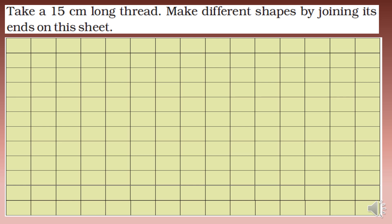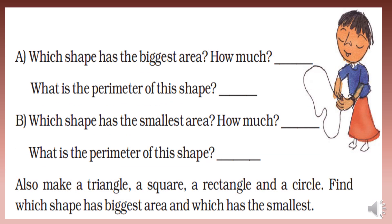Take a fifteen-centimeter-long thread and make different shapes by joining its ends on this sheet. I request you to do this by yourself. Find out which shape has the biggest area and how much is the area, what is the perimeter of that shape, and which shape has the smallest area. Also make a triangle, a square, a rectangle, and a circle, and find which shape has the biggest area and which has the smallest.